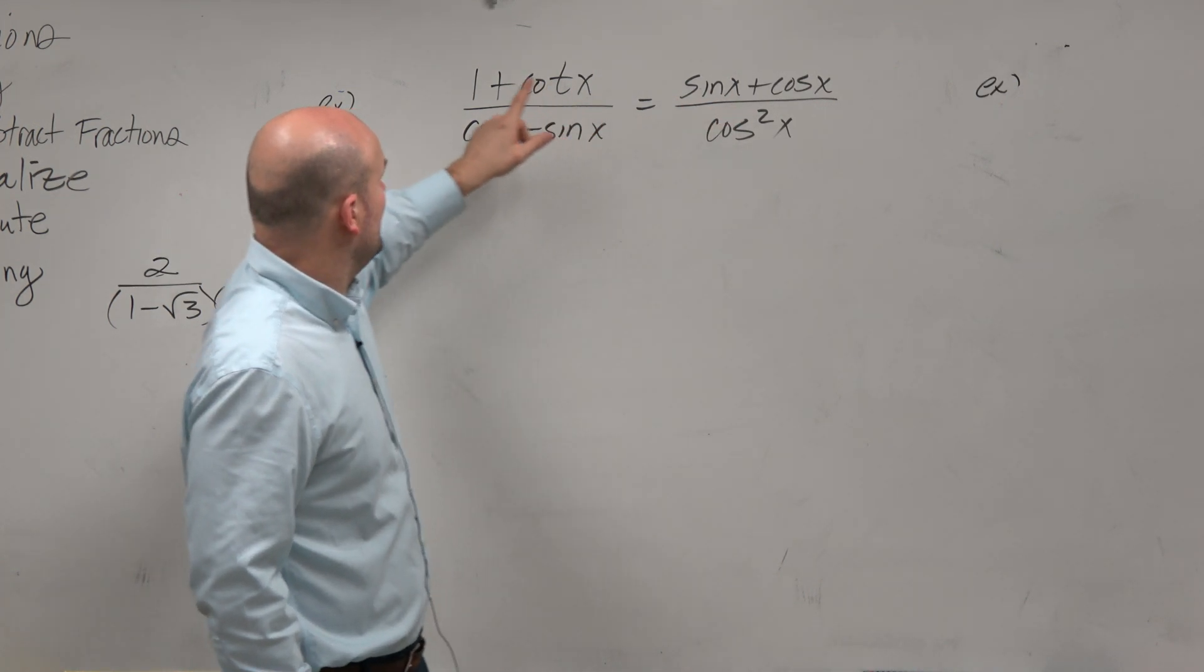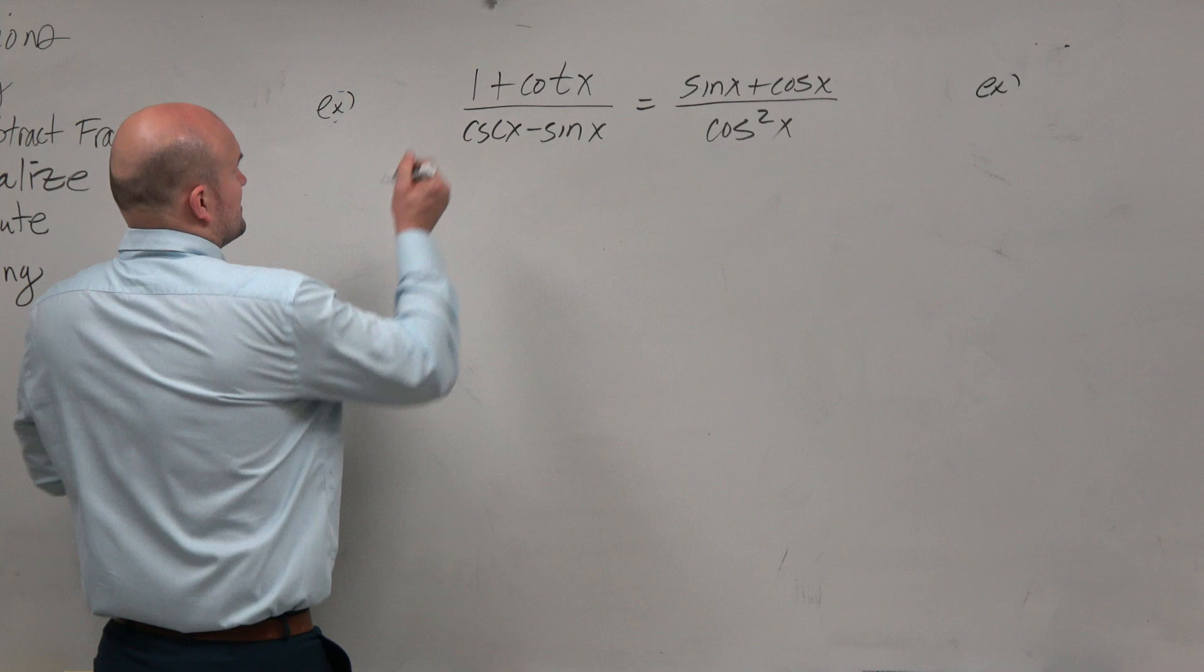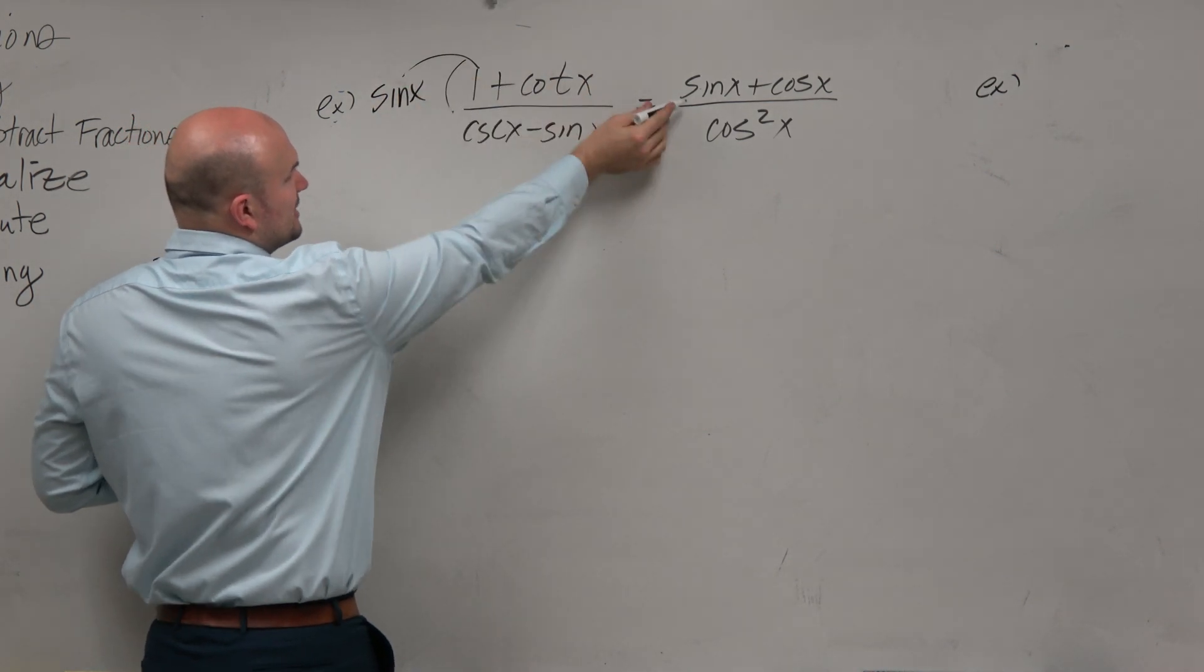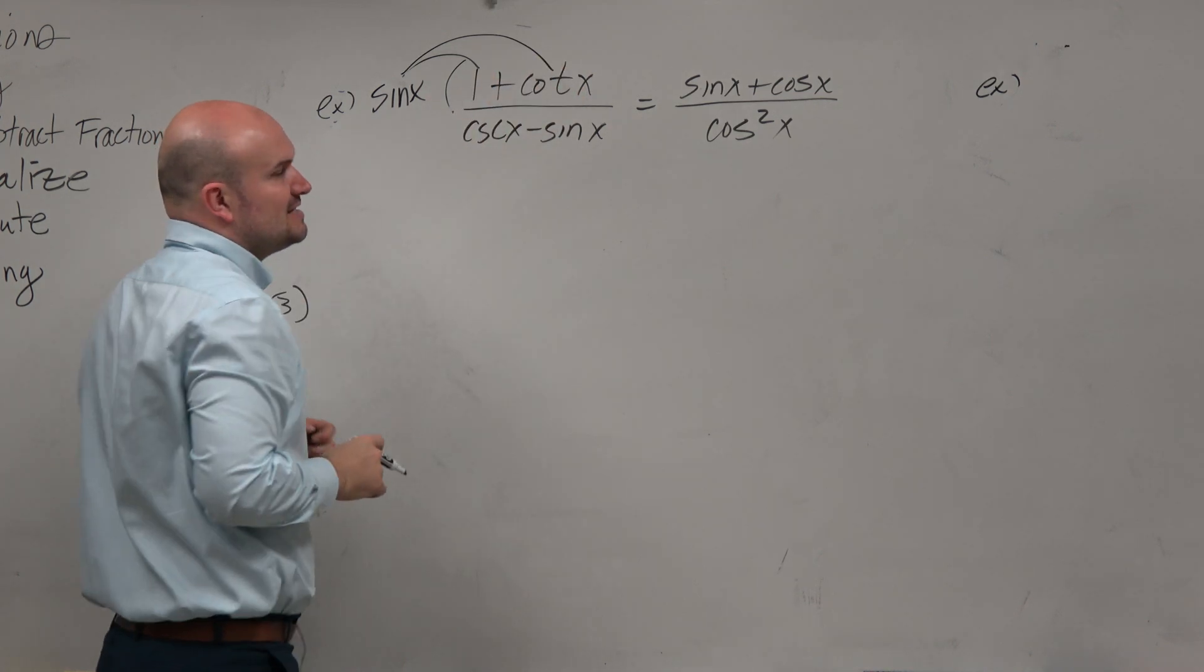Sine, right? And well, let's think about this. If I multiplied sine times 1, that gives me sine. What happens when I multiply sine times cotangent?